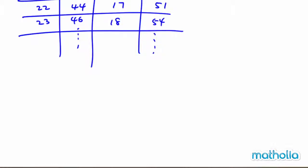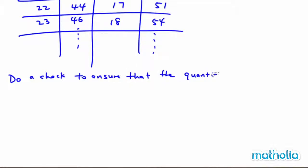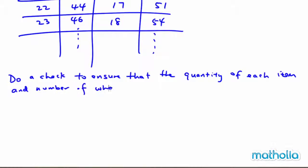Now what I need to do is a check. You must always do a check to ensure that the quantity of each item and the number of wheels are tallied.